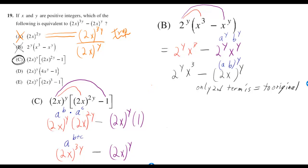If x and y are positive integers, which of the following is equivalent to 2x to the 3y minus 2x to the y?